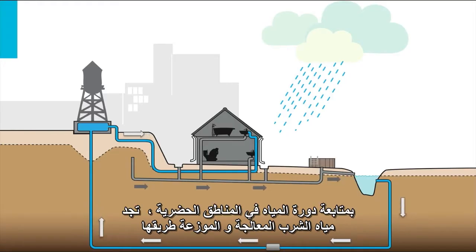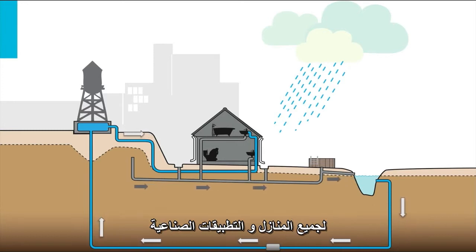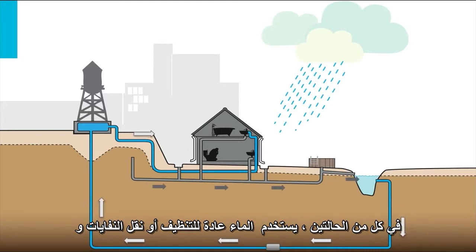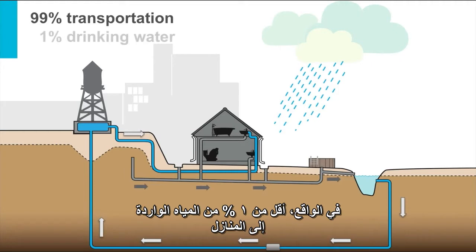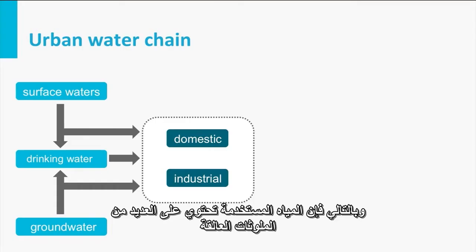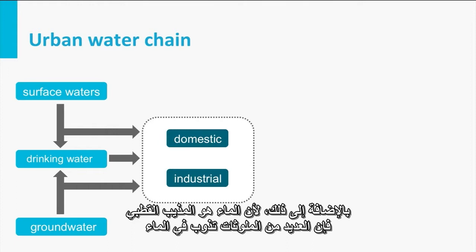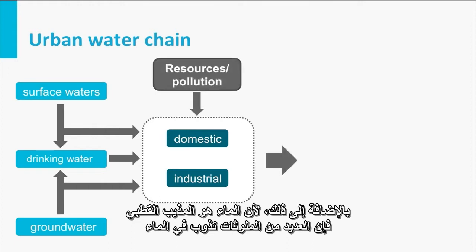Following the urban water chain, the treated and distributed drinking water finds its way to all households and industrial appliances. At both uses, water is generally used for cleaning or transport of waste products, and only a very limited amount is actually used for drinking. In fact, less than 1% of the water supplied to the households. Therefore, the used waters contain many suspended pollutants and, because water is a polar solvent, many pollutants will dissolve in the water.